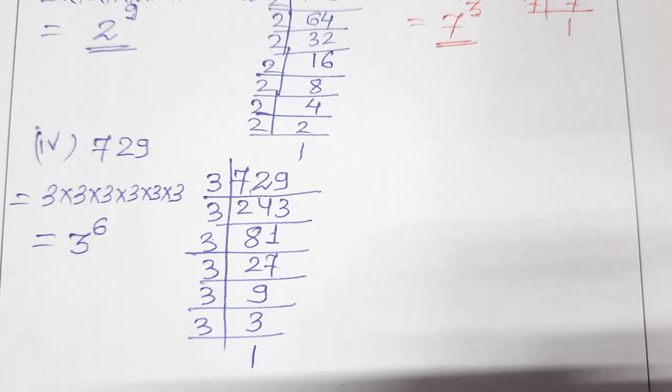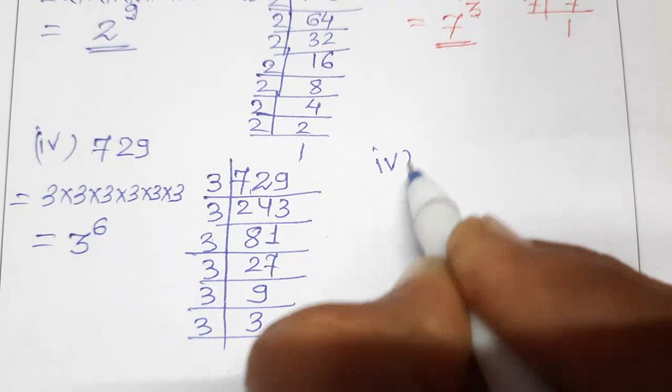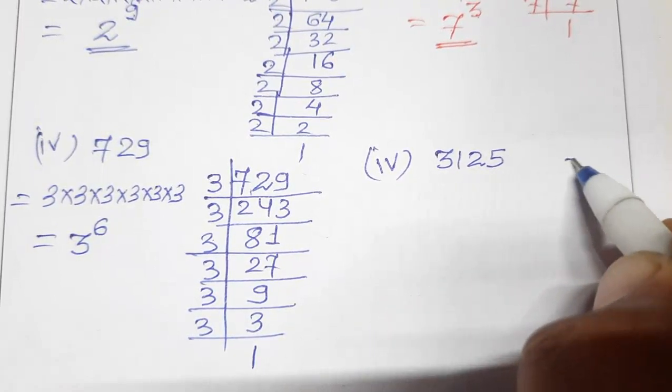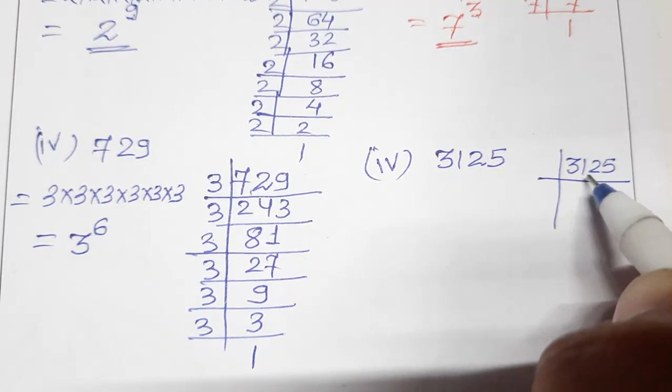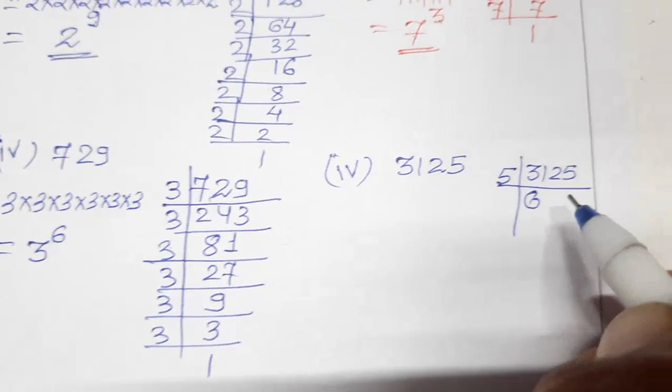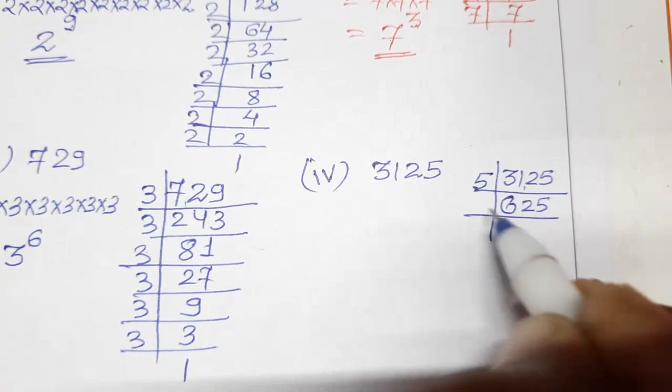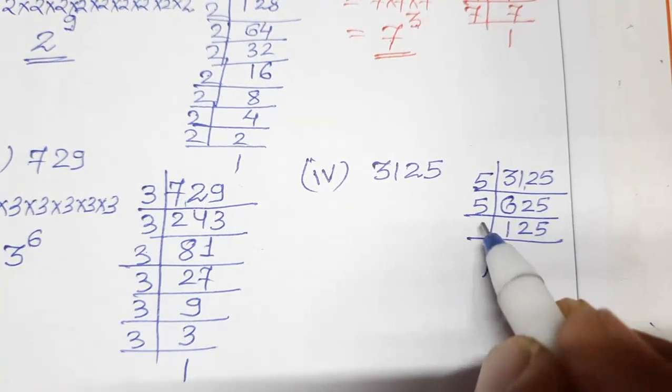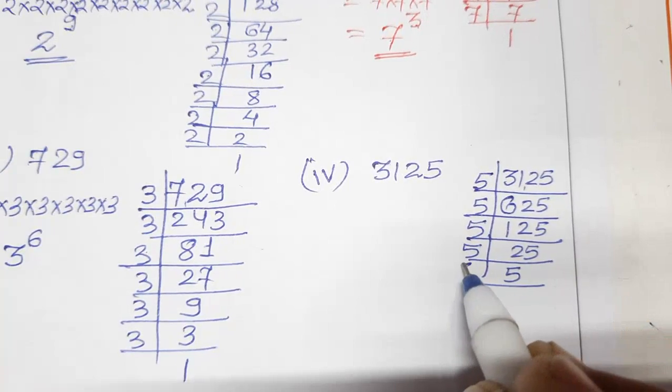Then next one is 3125. Let's do the last one. So again we will take the factors of 3125. It is divisible by 5. 5 goes into 3125 to give 625, then 125, then 25, then 5, and finally 1.